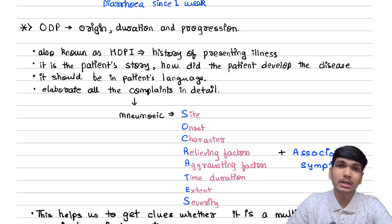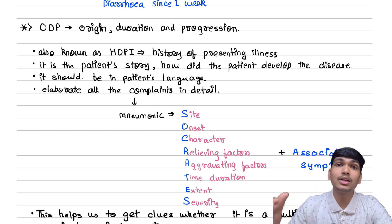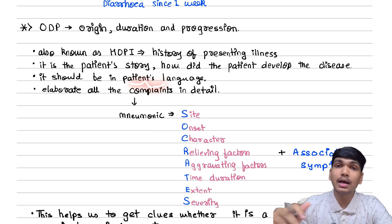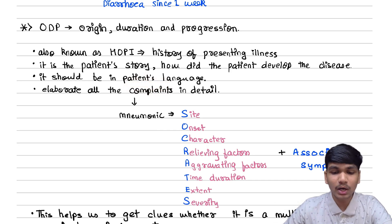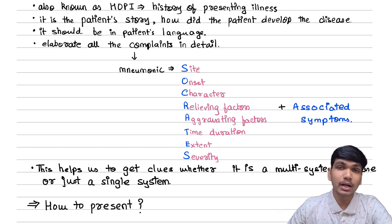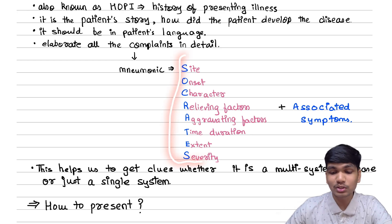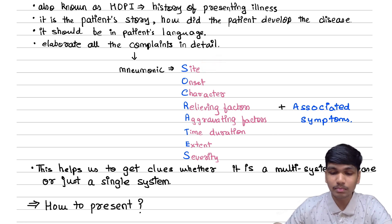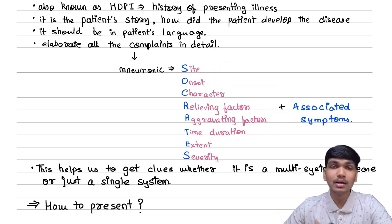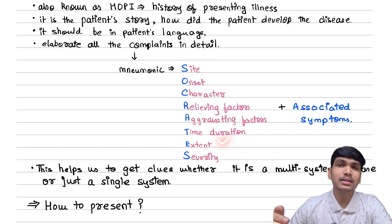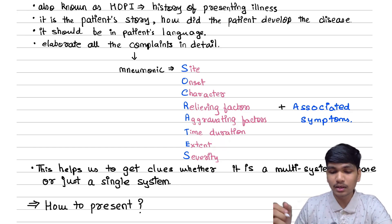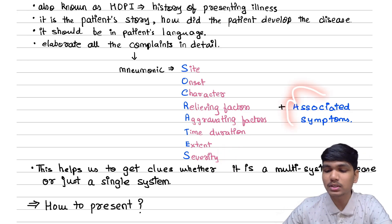ODP is also known as HOPI — history of presenting illness. Here you have to elaborate the patient's story in the patient's language and how the patient developed this disease. For that, a very good mnemonic is SOCRATES: Site of the symptom, Onset, Character, Relieving factors, Aggravating factors, Time/duration since the symptom is occurring, Extent — whether it is progressing to a certain organ — and Severity of the disease, and at the end, Associated symptoms.